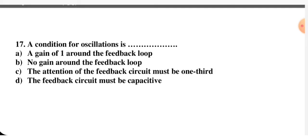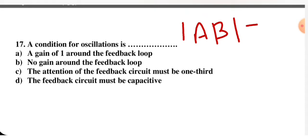A condition for oscillation is — gain of one around the feedback loop, no gain around the feedback loop, the attenuation of the feedback circuit must be one-third, or the feedback circuit must be capacitive. The condition for oscillation is called the Barkhausen criterion, in which we have a gain of one around the feedback loop. So option A is correct.